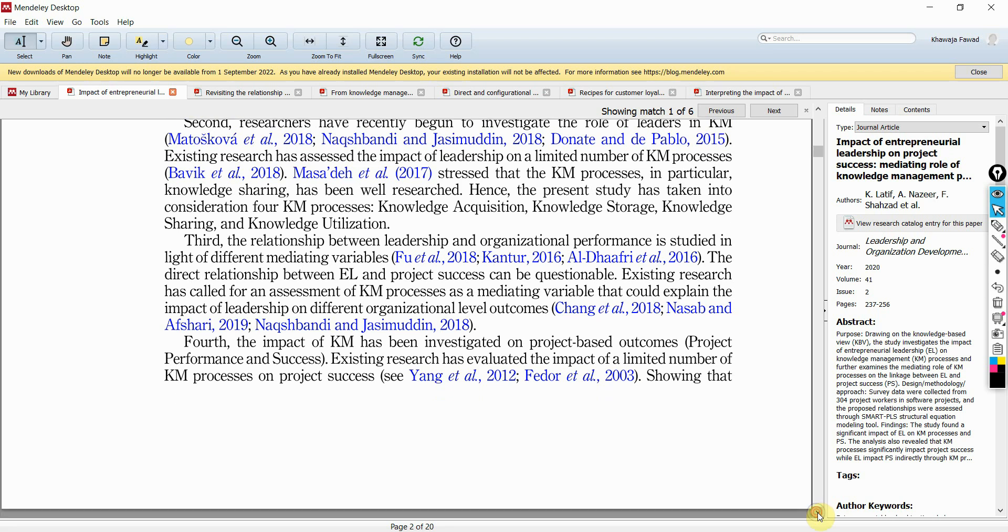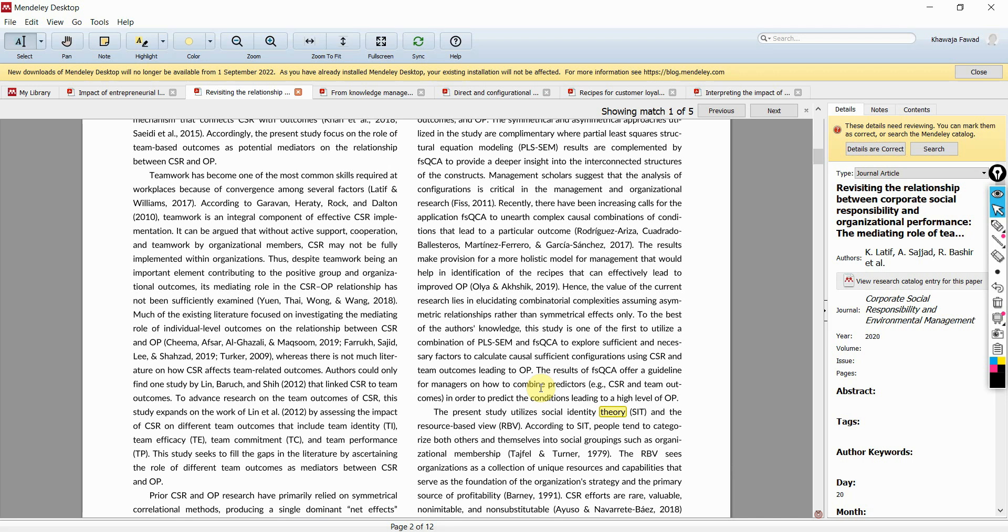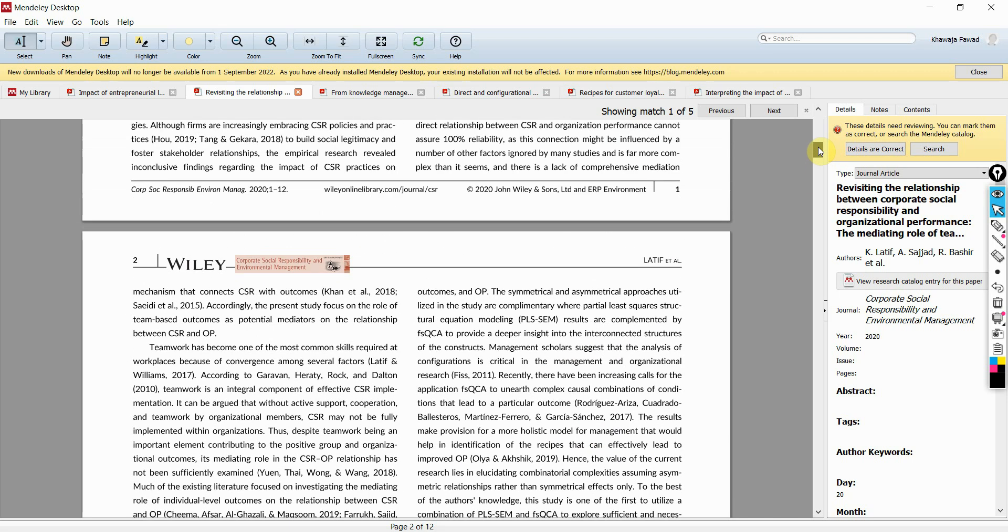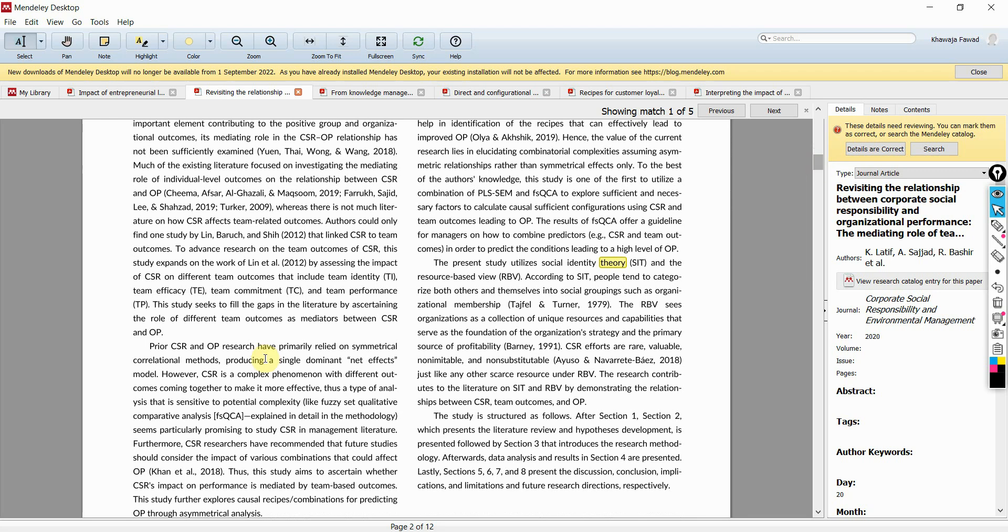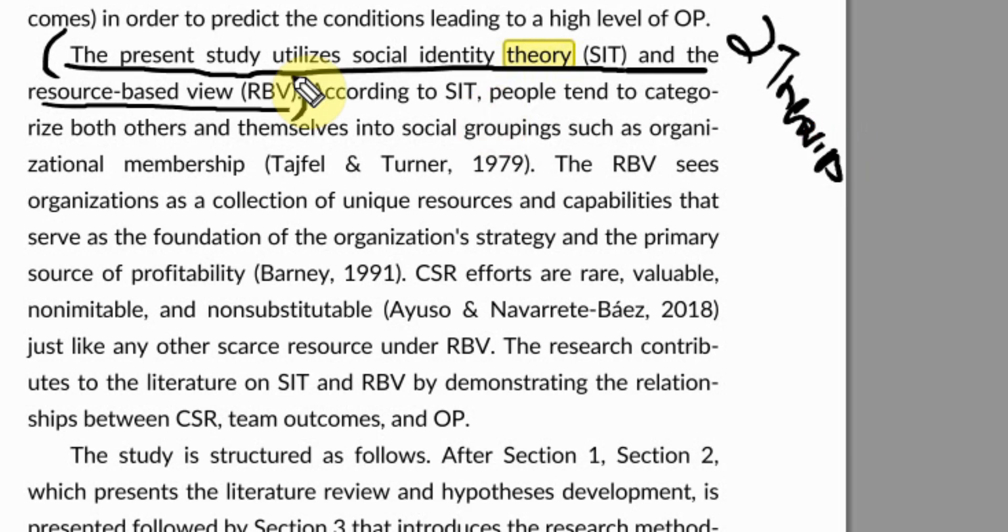once you've described the gaps and all, and we are going to talk about how to describe the gaps that will follow. So, you start in the introduction after you have mentioned the gaps and all, the existing research, the gaps in existing research. Here it is. You explain the present study utilizes social identity theory and the resource-based view. Now that you have identified the two theories that you are going to use, the next step is briefly describe each one of them.